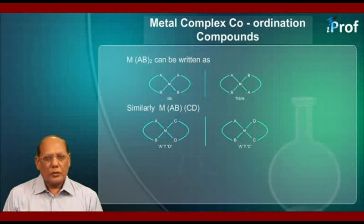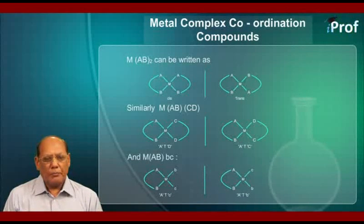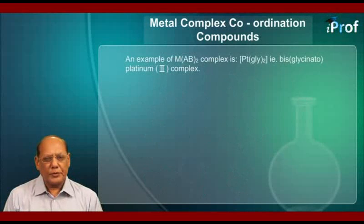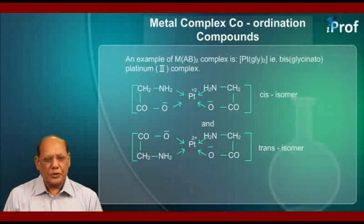Similarly, the complex MABCD will have two forms denoted by A trans to D and A trans to C. And the complex MAB(BC), as shown here, will be denoted as capital A trans to C and capital A trans to B. An example of an MAB2 complex is [Pt(gly)2], that is the glycinato platinum(II) complex, whose cis and trans forms are shown here with their structural formula.